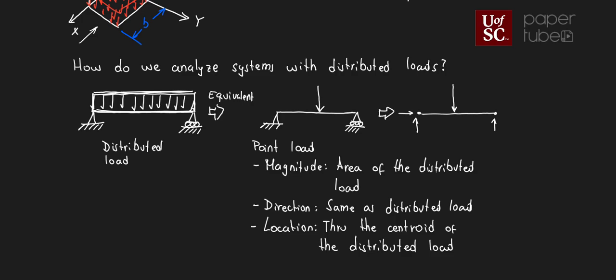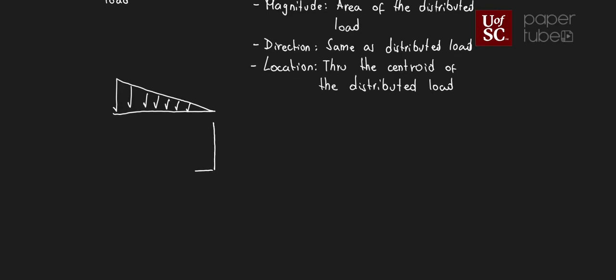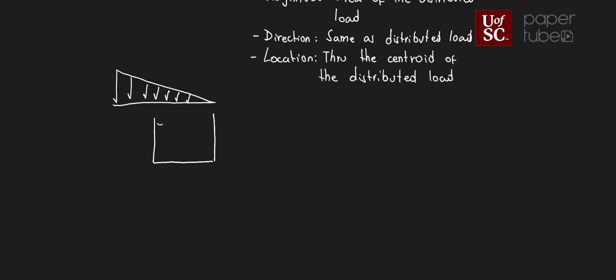Not all distributed loads are going to look like a rectangle. In some cases, we may have distributed loads that are triangular — for example, snow that is higher on one side and lower on the other. Another example of a triangular load is a water tank: the distributed force on the side of the tank increases with depth, creating a triangular force distribution. So those are some different examples of distributed loads.